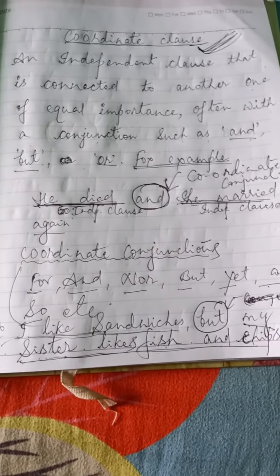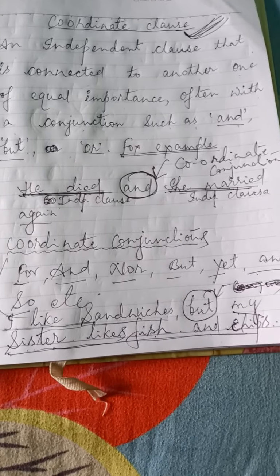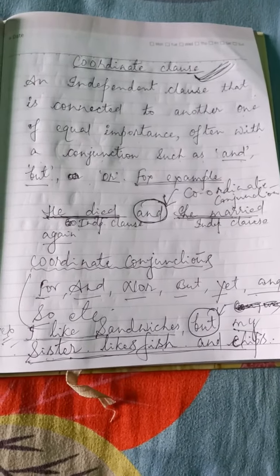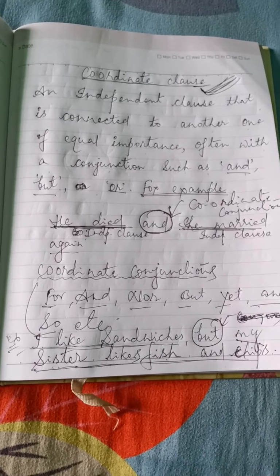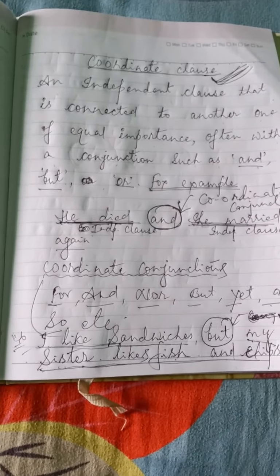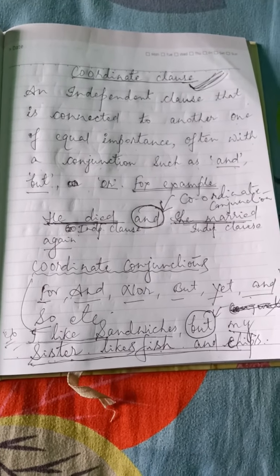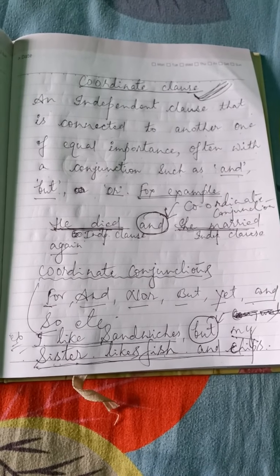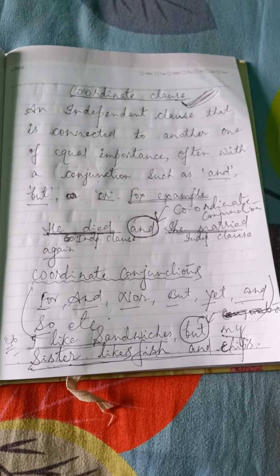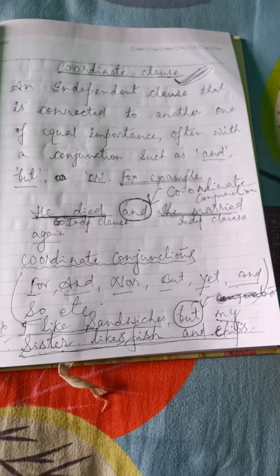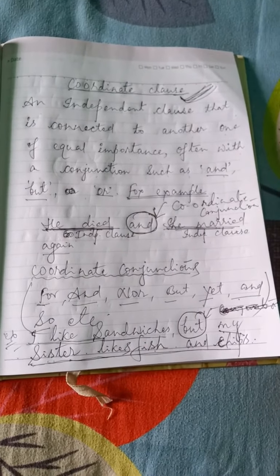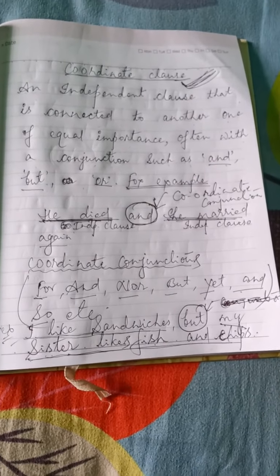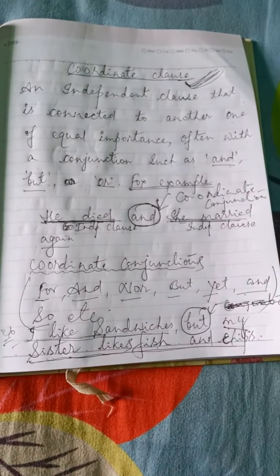In our next video, we will discuss the different types of subordinate clauses — noun clause, adjective clause, and adverb clause. These are three important subordinate clauses we will cover next. Till then, take care of yourself. Thank you very much and have a nice day ahead.